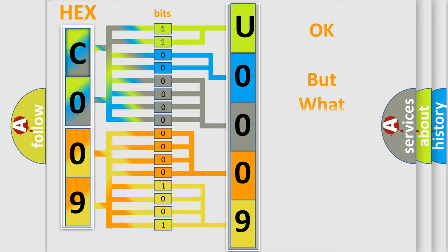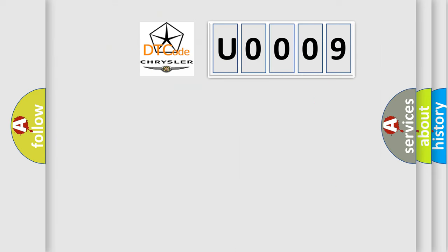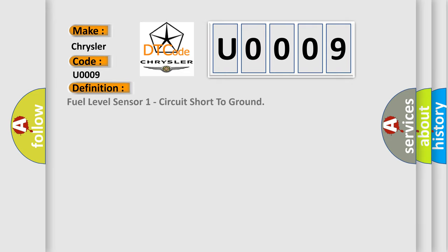The number itself does not make sense to us if we cannot assign information about what it actually expresses. So, what does the diagnostic trouble code U0009 interpret specifically for Chrysler car manufacturers? The basic definition is: Fuel level sensor one circuit short to ground.